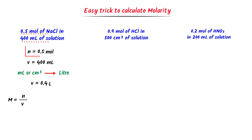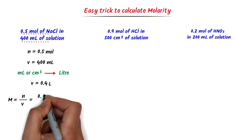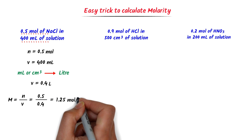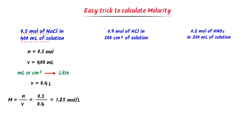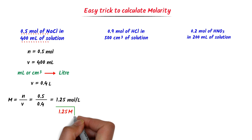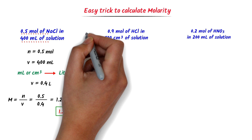We already know that molarity M equals N upon V. Here, N equals 0.5 mol and V is 0.4 litre. I plug in these two values in this equation. After calculation, I get 1.25 mol per litre, or just 1.25 M. Thus, the molarity of this solution is 1.25 M.